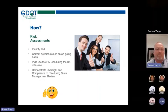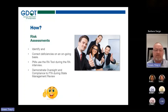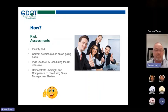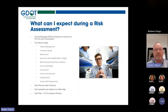The risk assessments identify and correct deficiencies on an ongoing basis. Project managers use the risk assessment tool during the risk assessment interview, which is a desk review conducted annually to demonstrate oversight and compliance to FTA during the state management review — what GDOT goes through about every three years with FTA. Project managers schedule and conduct the risk assessment with each subrecipient to go over 10 review areas.